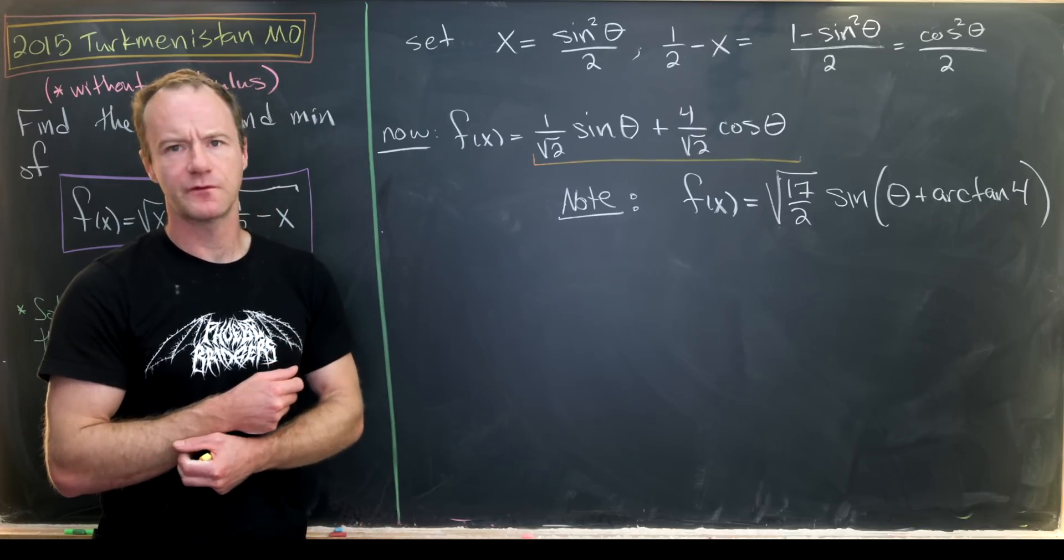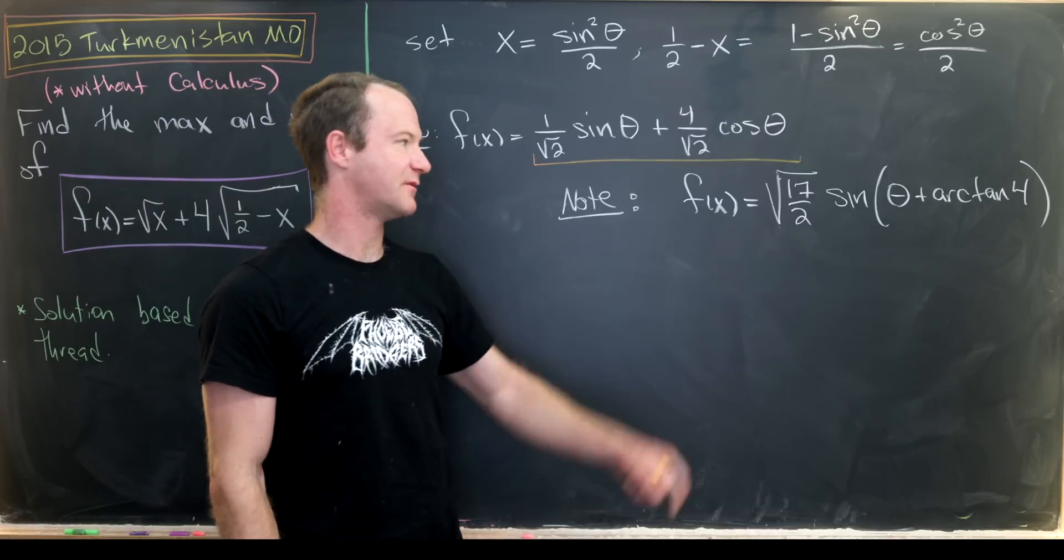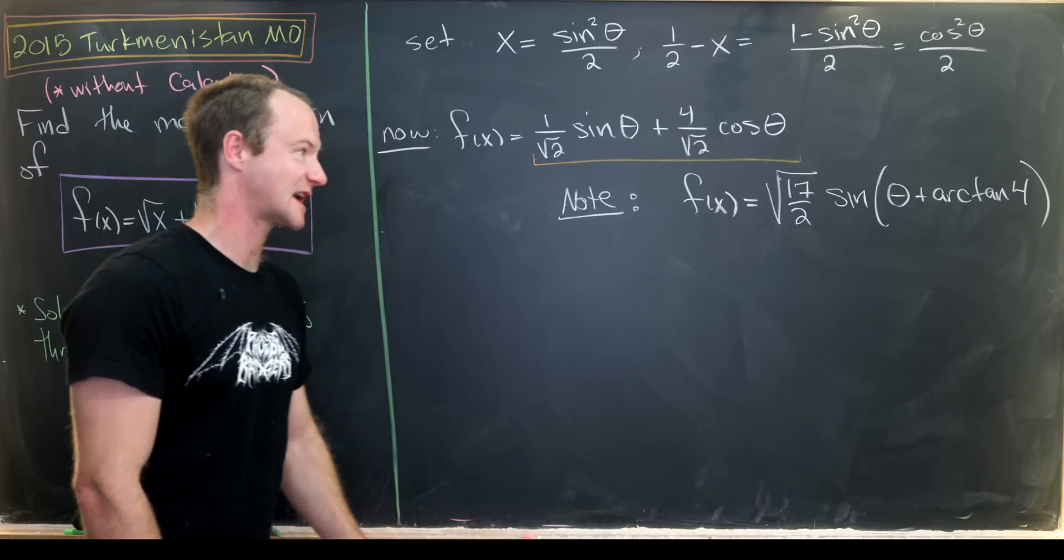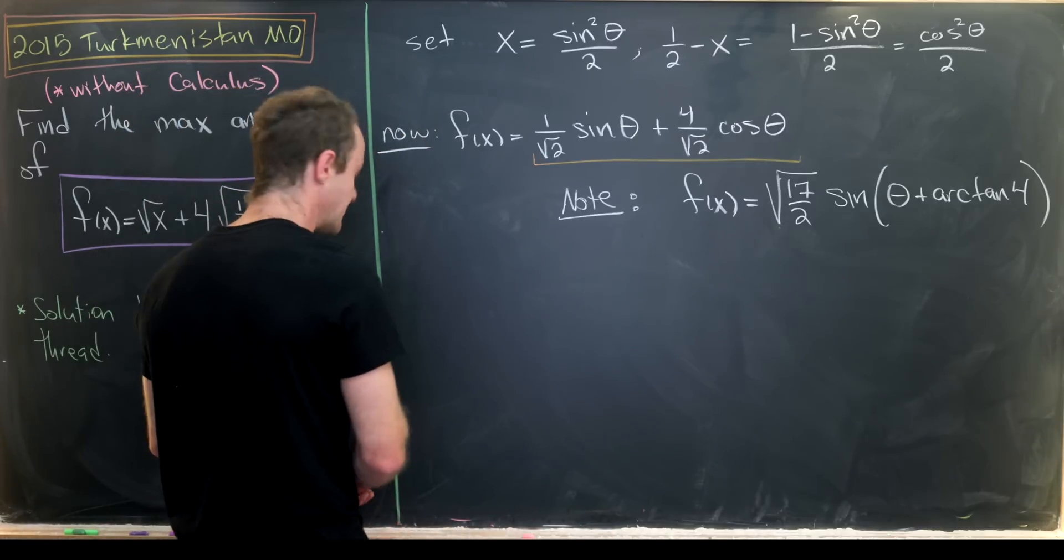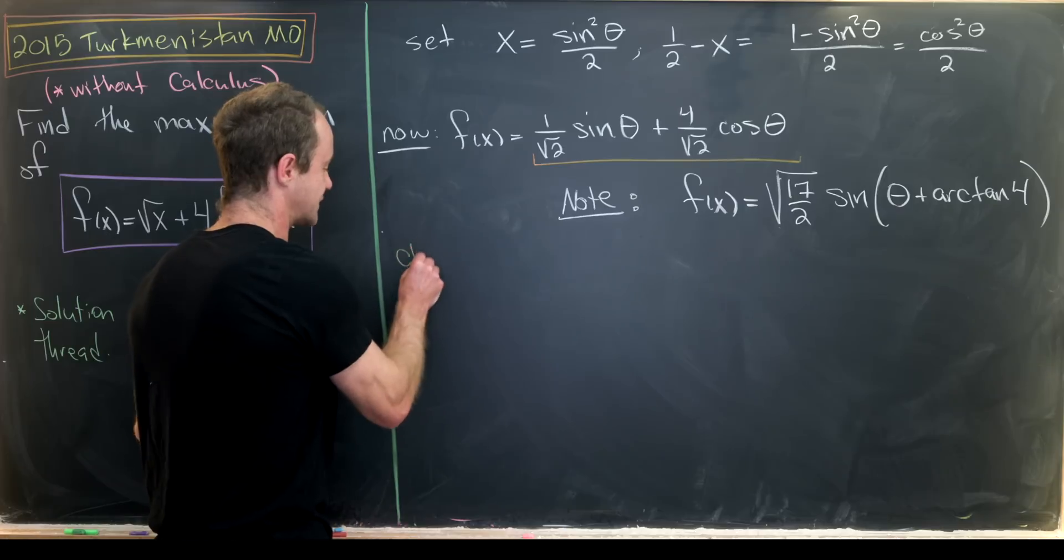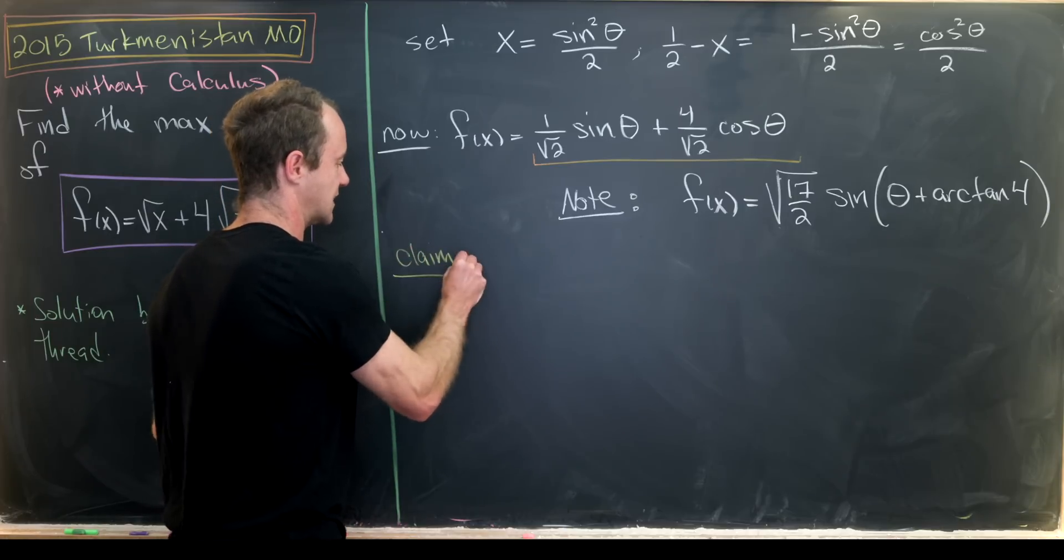And where would we go from here? So we know the maximum value of sine is 1, so it stands to reason the maximum value of f of x is the square root of 17 over 2. And that's exactly correct. So let's prove that via kind of a claim.